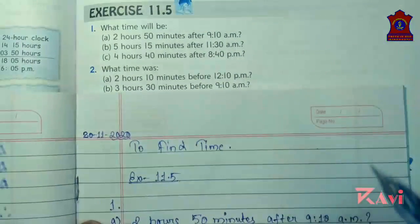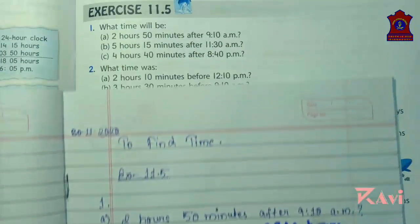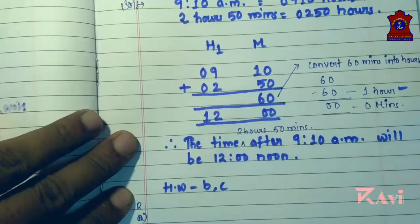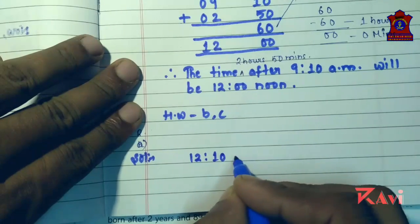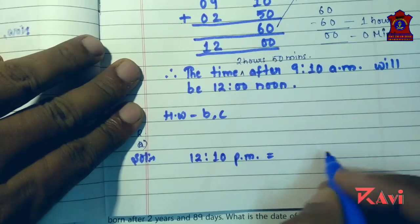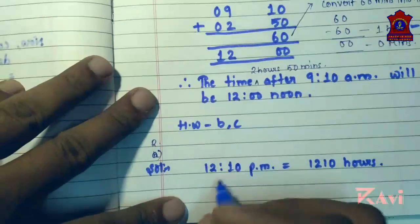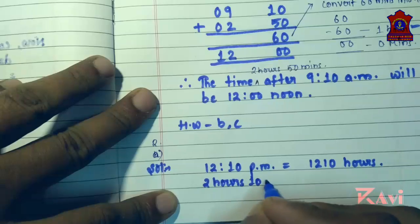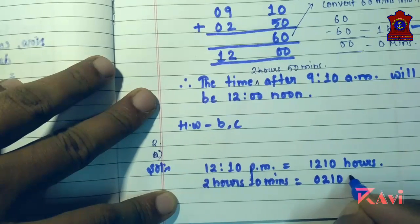You will be using the same method and then subtract — here we had added, but now use the same method and subtract. First of all, convert 12:10 p.m. equals to 1210 hours. Now, 2 hours 10 minutes before, so write 2 hours 10 minutes equals to 0210 hours.